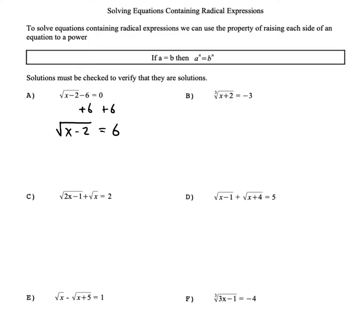Now we want to undo the radical. Just like the inverse of squaring is square root, the inverse of square root is squaring. If we have one side of an equation equal to another, we're allowed to raise both sides to any exponent of our choice. In this situation, the best choice is to square both sides. The square will cancel the square root — they're inverse operations — so they'll go away.